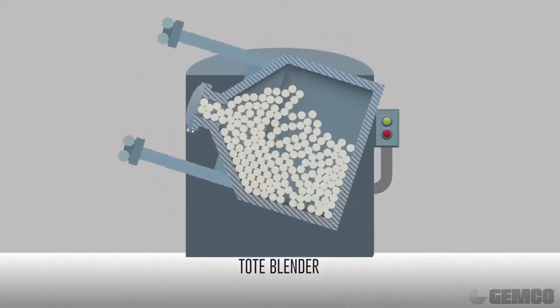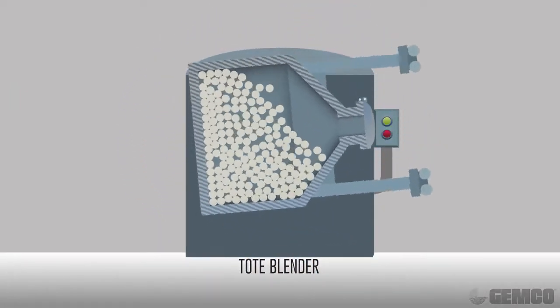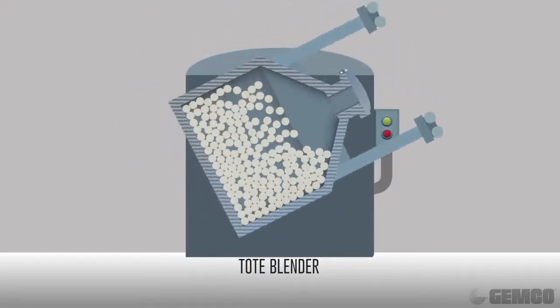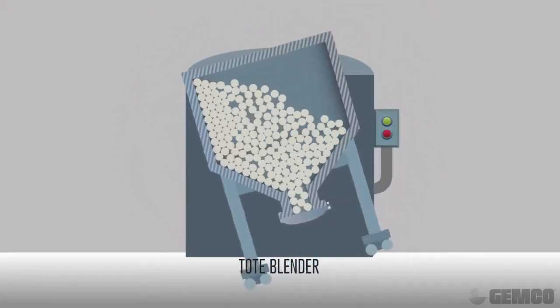Let's take a look at tote blenders more closely. They can provide multiple axis blending and deliver a particular pattern but lack micro mixing or milling within the same machine.